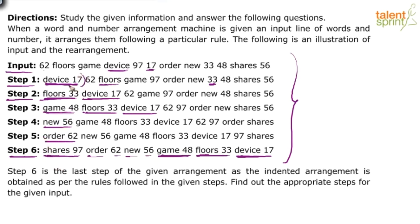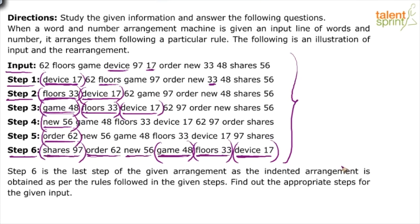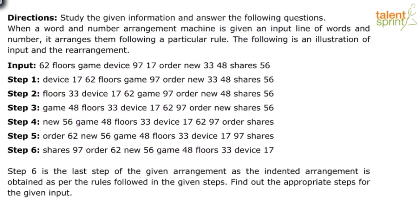We are doing the movement in pairs — one word and one number per step. The pairs are chosen by looking at the output: device and 17 at the end, then floors and 33 before that, then game and 48, then new with 56, then order with 62, and finally shares with 97. Keep bringing the pairs to the first position and push everything else inside. The final output will have words and numbers in alternate positions, words in reverse alphabetical order, and numbers in descending order.